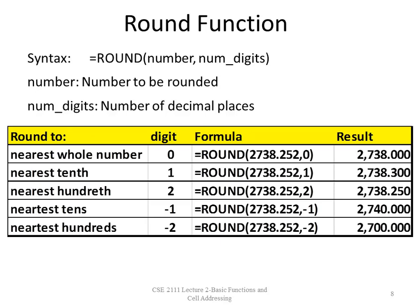The rules for num_digits: if you put zero, it rounds to the nearest whole number. If you put one, it rounds to the nearest tenth. If you put two, it rounds to the nearest hundredth. If you put negative one, it rounds to the nearest tens. Negative two rounds to the nearest hundreds, and so on — negative three, negative four, or positive one, two, three, four.